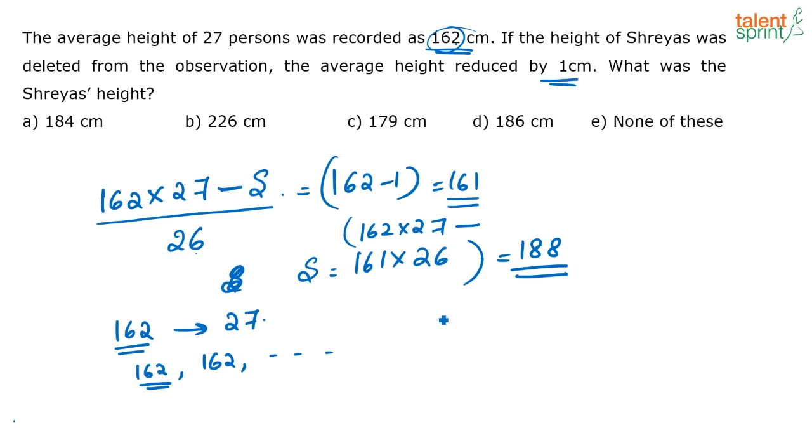Now the average height of these 26 people has become 161. So each height of each person in this group of 26 persons has reduced by 1. Earlier, the average height of each person was 162. When Shreya goes, each person's average height is reducing by 1.